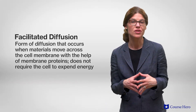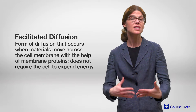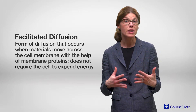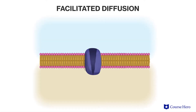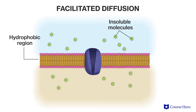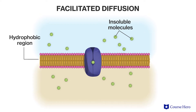Facilitated diffusion occurs when materials diffuse across the cell membrane with the help of membrane proteins. Even though a concentration gradient still drives the diffusion of these molecules into the cell, their polar nature prevents them from passing through the hydrophobic region of the cell membrane. Channel and carrier proteins shield such molecules from the repulsive forces of the membrane and allow them to diffuse quickly into the cell.